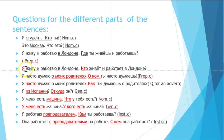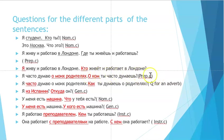If we want to make a question to the personal pronoun 'я', it would be 'кто' — 'кто живёт и работает в Лондоне?' (who lives and works in London). For 'я часто думаю о моих родителях' (I often think about my parents), the prepositional case question is 'о ком' — 'о ком ты думаешь?' (who are you thinking about?)